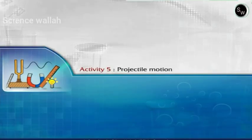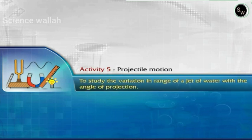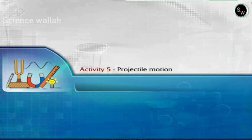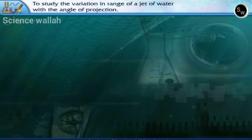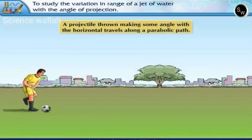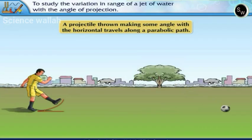Activity 5: Projectile motion. To study the variation in range of a jet of water with the angle of projection. A projectile thrown making some angle with the horizontal travels along a parabolic path.